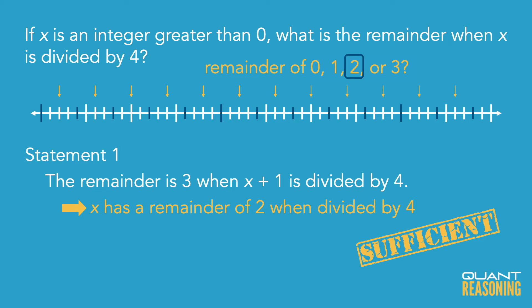So statement 1 is certainly sufficient on its own. We can eliminate answer choices B, C, and E, and we're down to A or D. Now statement 2 tells us which category 2x belongs to.